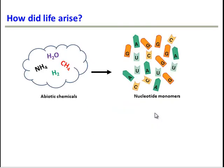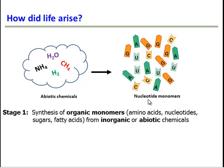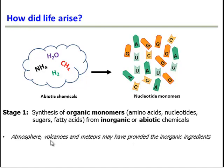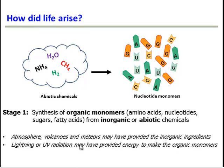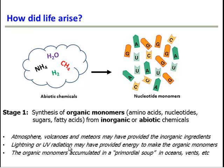The first stage in the hypothesis is that abiotic chemicals found in the atmosphere — like methane, ammonia, and hydrogen — reacted together to form organic monomers, such as nucleotides, which are monomers of RNA and DNA. So we used inorganic building blocks to make organic building blocks. The atmosphere back then, along with volcanoes and meteors, could have provided these ingredients, while energy for these reactions could have come from lightning or UV rays. These organic monomers then accumulated in the primordial soup — in oceans, deep-sea vents, and volcanoes.